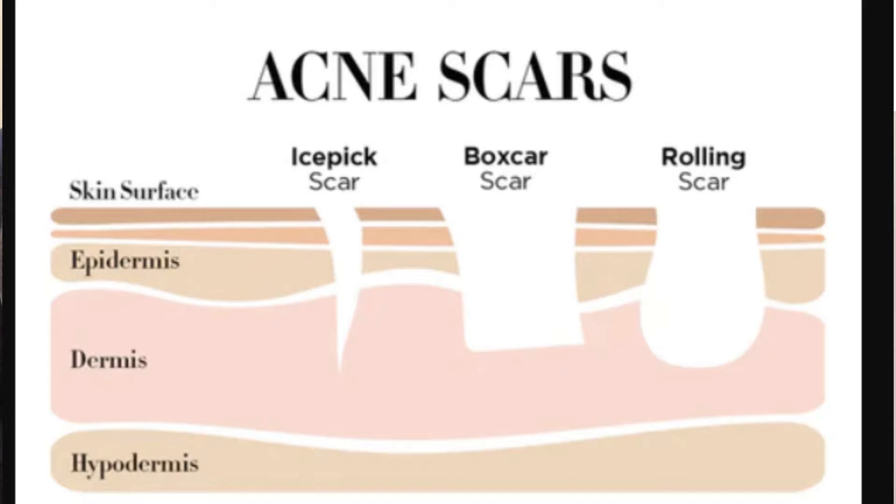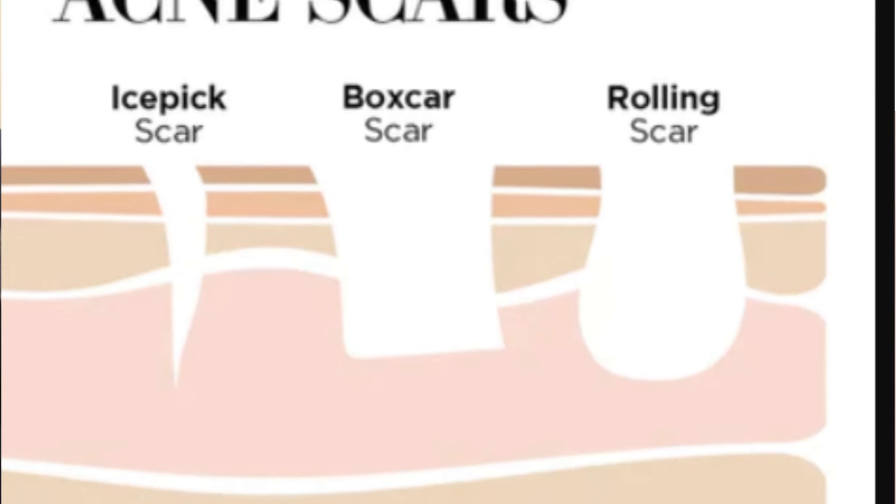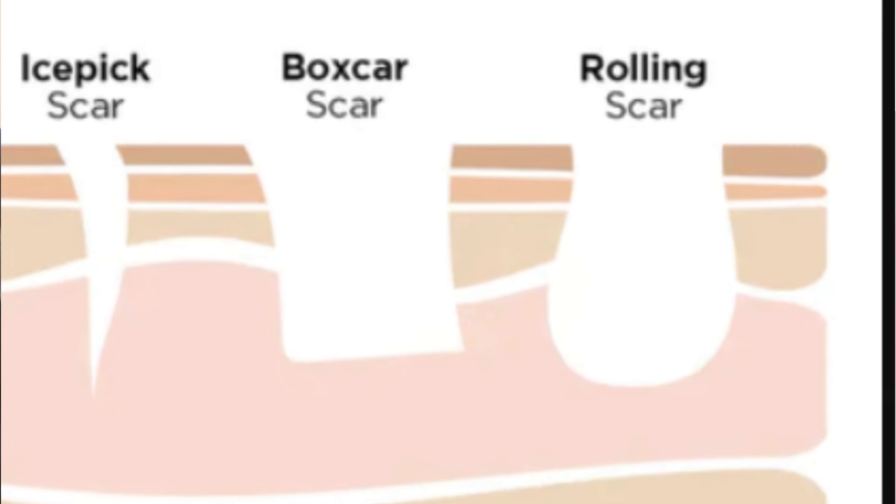Next is box scars — these are also depressions but with well-defined margins in a box shape, with clearly demarcated borders. These three atrophic scar types can be addressed with proper treatment in a timely manner.